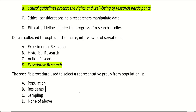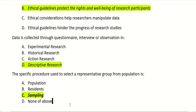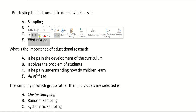The specific procedure used to select a representative group from the population is: population, sampling, or none of the above? The right answer is sampling. Pre-testing an instrument to detect weaknesses — is it sampling, sociometric technique, inventory, or pilot test? The right answer is pilot testing.